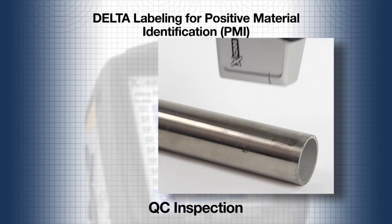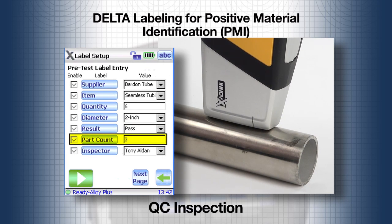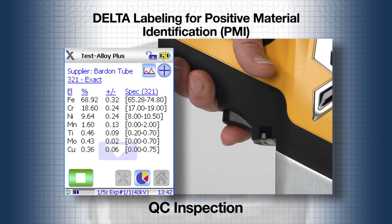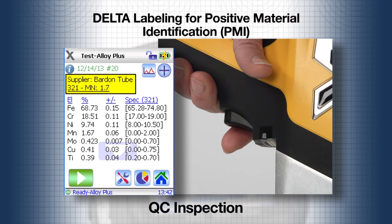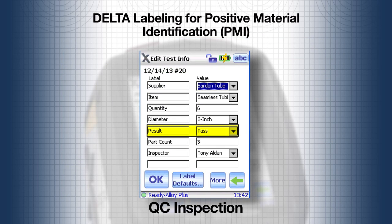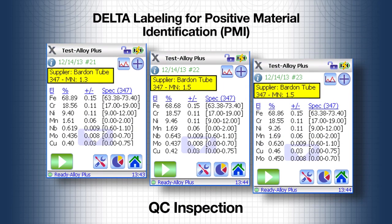The third tube test starts like the previous two, with the label window appearing and the part count now at 3. Pull the trigger and the test starts. The results show that the tubing is 321 grade, not the expected 347. Tap the info icon to open the edit test info window and change the result to fail grade. The fourth, fifth, and sixth tubes are all 347 grade.